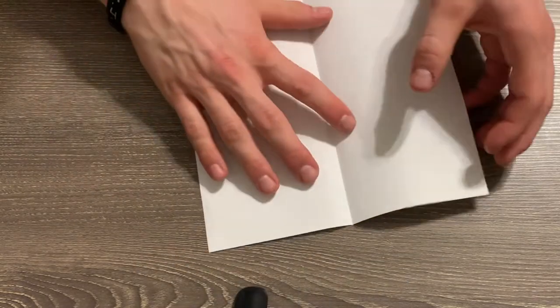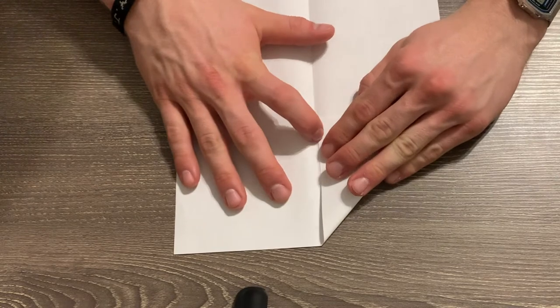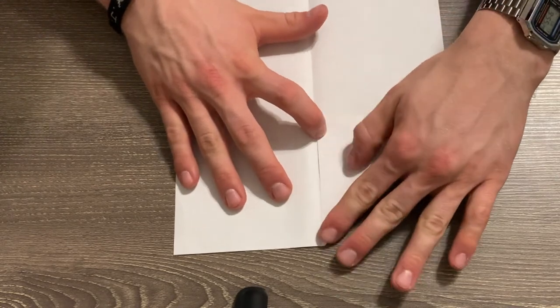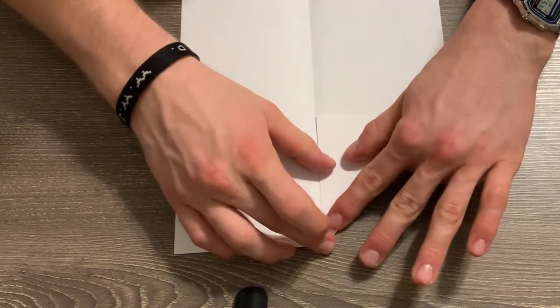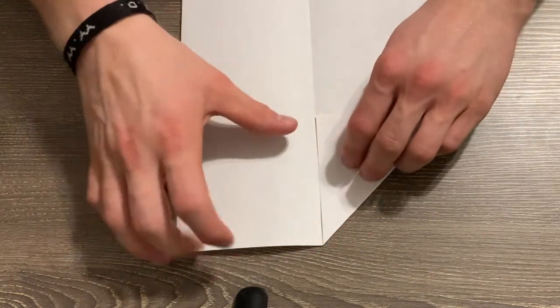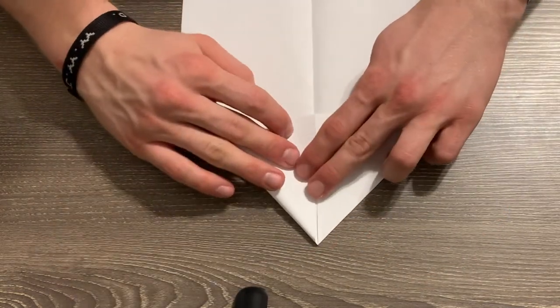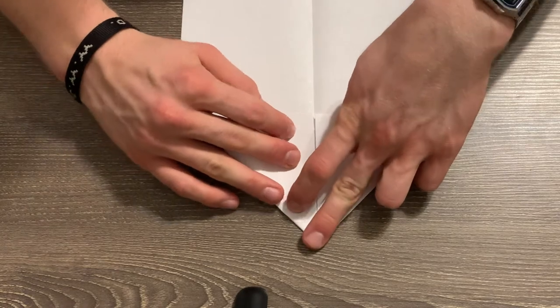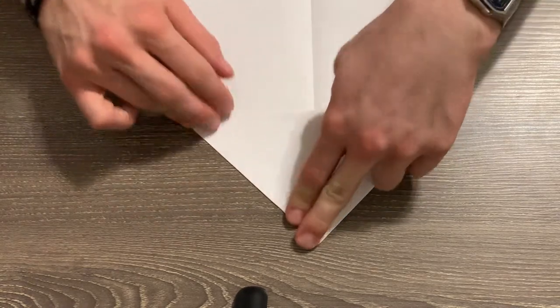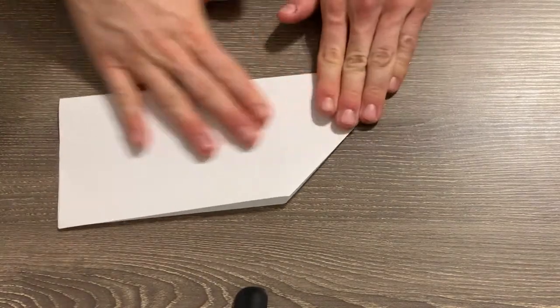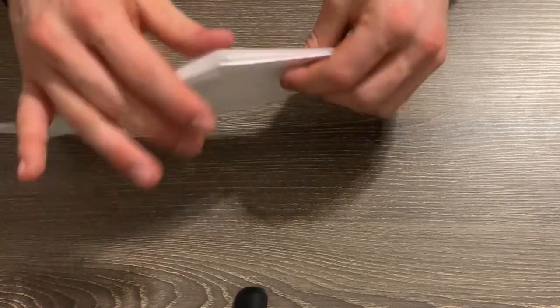Once you have a nice fold down the middle, you can open it back up and fold in both of the top corners to that line that you made. It kind of gives you a nice line of reference to make your folds to. Once you have your two folds, you can fold your paper on top of itself like this, and you should have a nice little pointed triangle.